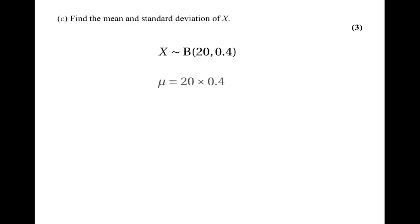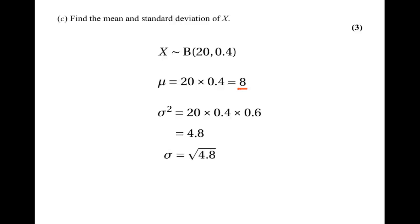The last part of this question asks for the mean and standard deviation of the number of diners choosing organic food. With x ~ B(20, 0.4), the mean is 20 times 0.4 = 8. The variance is 20 times 0.4 times 0.6 = 4.8, so the standard deviation is the square root of 4.8, which is 2.19 to three significant figures.